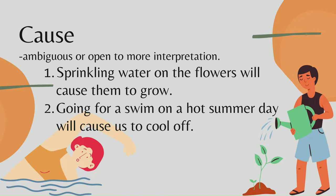For example, sprinkling water on flowers will cause them to grow. But this does not mean that watering alone is all a flower needs to grow — watering is just one of the requirements. A flower also needs sunlight and good soil.